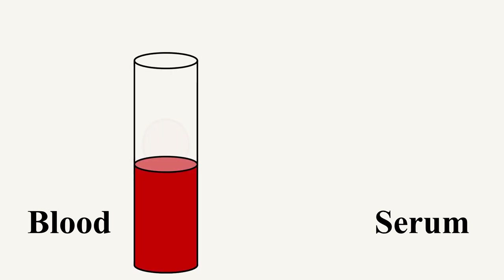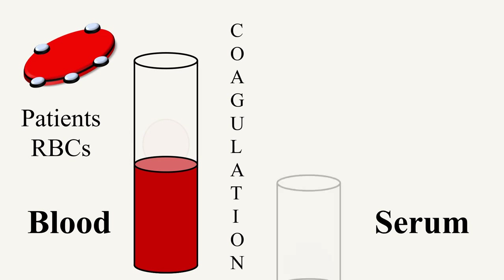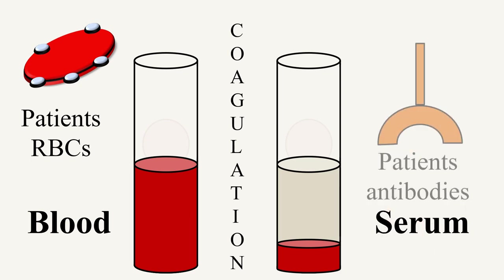For blood typing, we can use two types of samples: a blood sample or a serum sample. The blood sample contains all blood cells and coagulating factors. Thus, if we are using the blood sample, we will have all the RBCs showing the different antigens present on them. However, when you allow the blood sample to coagulate, the clear liquid which is left behind is known as serum. The serum is enriched with antibodies.